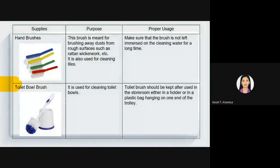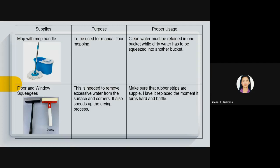Hand brushes are used for brushing away dust from rough surfaces such as rattan and wicker work, and also for cleaning tiles. The toilet bowl brush is used for cleaning the toilet. The mop handle is used for manual floor mopping. Proper usage: clean water must be retained in one bucket while dirty water is squeezed into a separate bucket — they must never be mixed. When storing, the mop should be hung, not left sitting in a bucket.